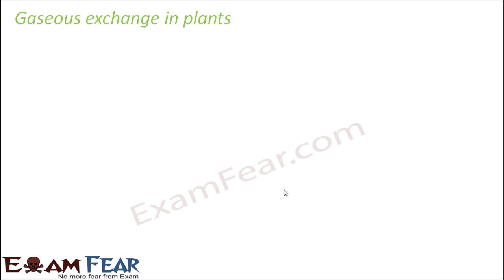Now let us talk about gaseous exchange in plants. As in the case of animals, for example human beings, we take in oxygen and give out carbon dioxide. Similarly, when you talk about plants, during the process of photosynthesis, they needed carbon dioxide. So they take in carbon dioxide and as a product of photosynthesis, oxygen was released.